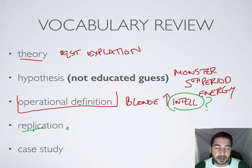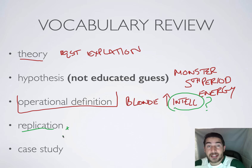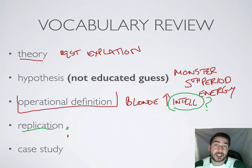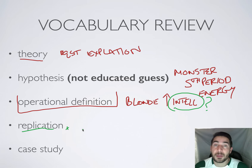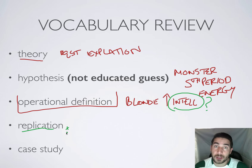One of the reasons we define terms clearly is so we can replicate the study. Replication means we do the same exact procedure, this time using a different population or different groups, and see if the results carry over. This tells us whether or not findings are generalizable. Replication is important — if you find something, it should happen every time, or at least every time within the group you're looking at.